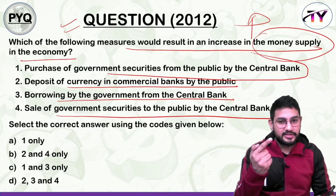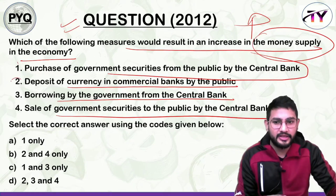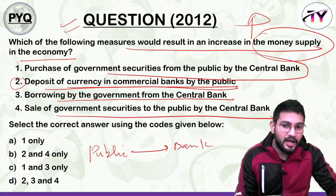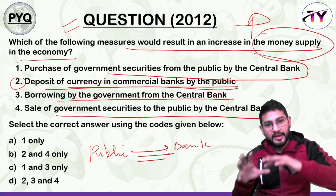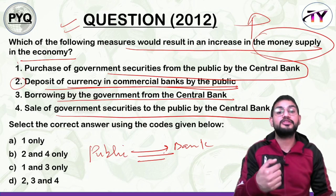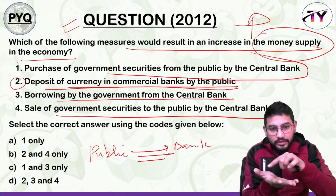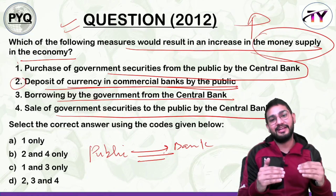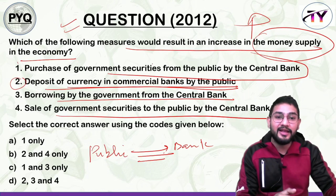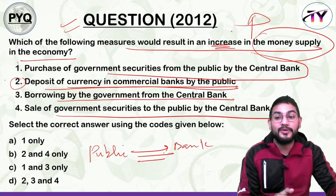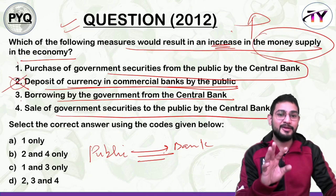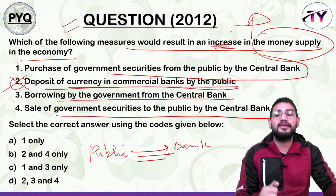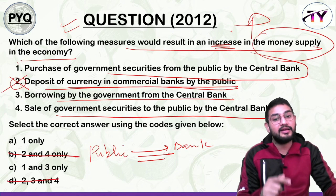We need to increase money supply. Look at Option 2: Deposit of currency in commercial banks by the public. When people deposit their money in banks, they have less cash in hand, so money supply in the economy decreases — but we need it to increase. So Option 2 is wrong. Similarly, Option 4 (sale of government securities to the public by the central bank) means the public gives money to the central bank, so money supply again decreases. Options B and D are eliminated.